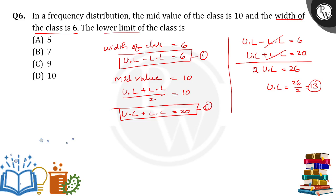But we want the lower limit, right? So substitute 13 in equation 1. Upper limit minus lower limit is 6, so 13 minus lower limit equals 6. Then lower limit is 13 minus 6, so we will get 7. So the lower limit of the class is 7.